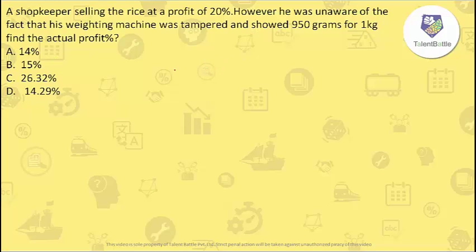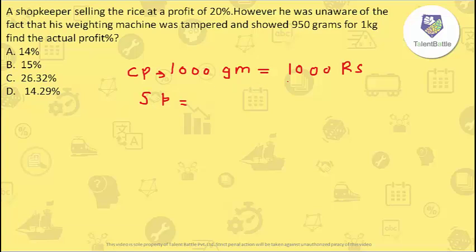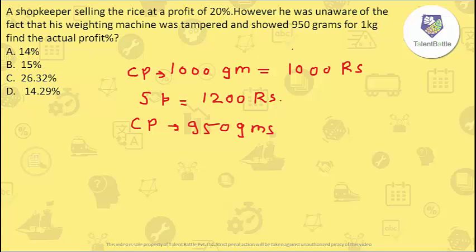To keep it simple, consider 1000 grams for 1000 rupees — suppose he purchased 1000 grams of rice at 1000 rupees. Selling at 20% profit, his selling price is 1200 rupees. However, since the machine was tampered and showed 950 grams for a kilogram, the cost price we need to consider is only for 950 grams. So the cost price of 950 grams according to this logic is 950 rupees.